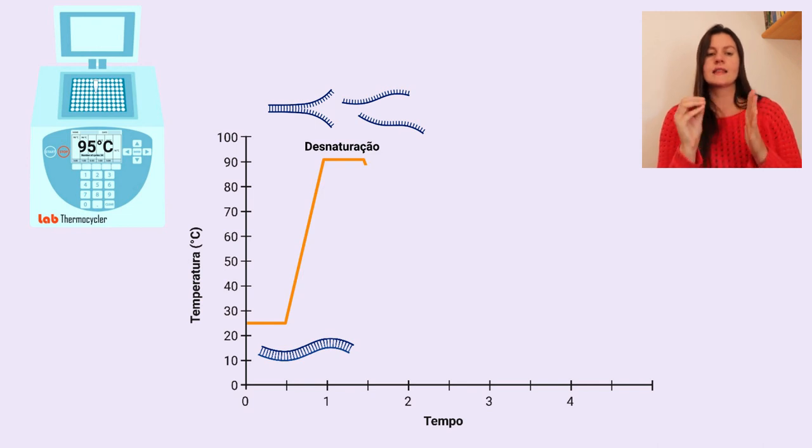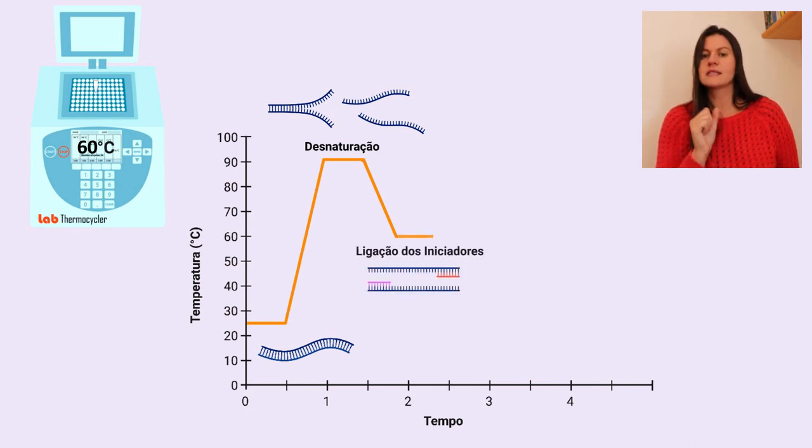Em seguida, a temperatura é diminuída para aproximadamente 60 graus. Nessa temperatura, os primers se ligam ao seu DNA complementar de forma específica, devido às suas sequências.